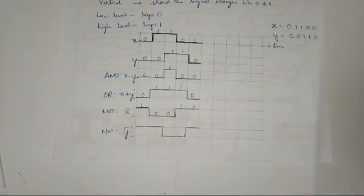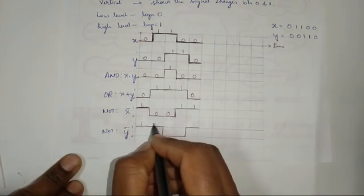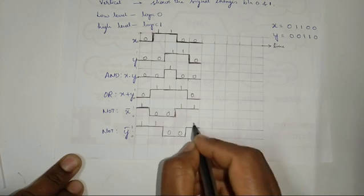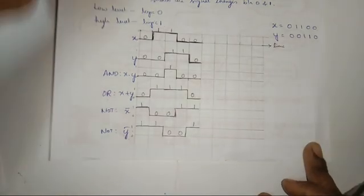This timing diagram will be very much useful for you in the lab experiment section from third experiment to eighth experiment. I am writing the numbers here: 1, 1, 0, 0, 1. Next, let us take the next topic.